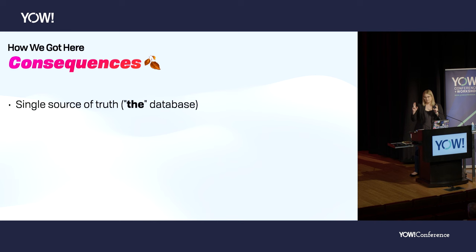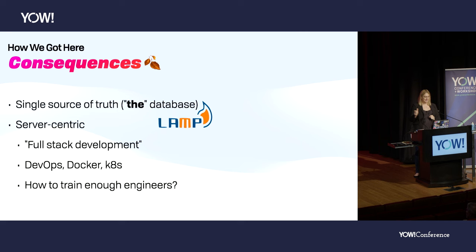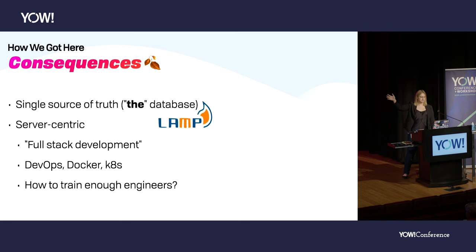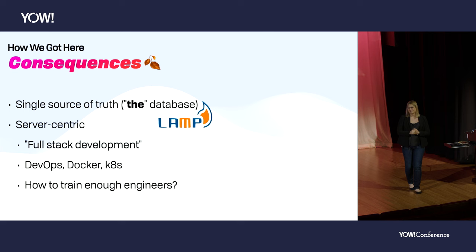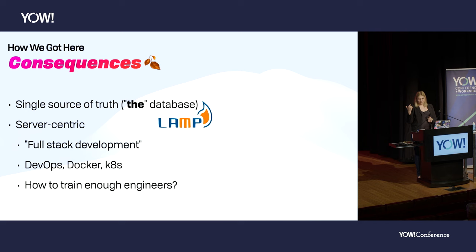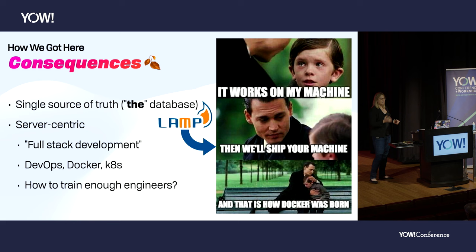This also has some consequences. We think about a single source of truth — the database. It's very server-centric. There's full-stack development: front end, back end. If you get your 15-minute Rails blog running, it works completely on your machine, but then you have to figure out how to get it to some hosted service and deal with DevOps, Docker, and Kubernetes. The LAMP stack was invented in the late 90s — Linux, Apache, MySQL, Perl then later PHP — and we've been extending this as the nearest tool at hand, shipping everything including the operating system into the cloud.